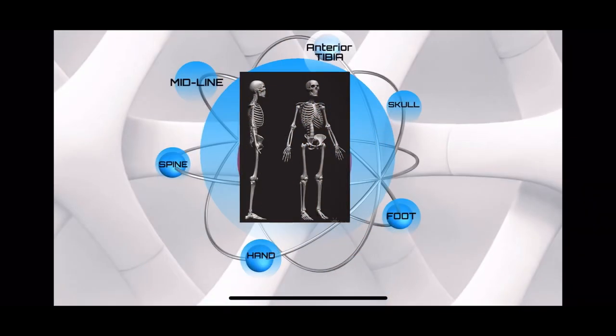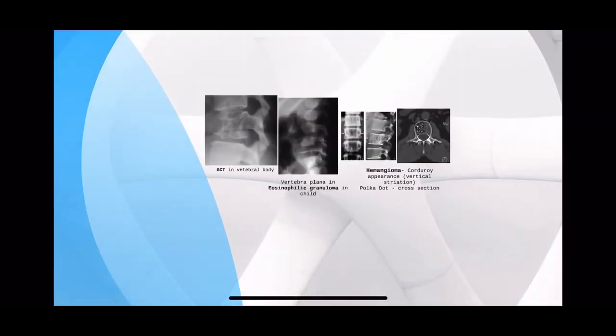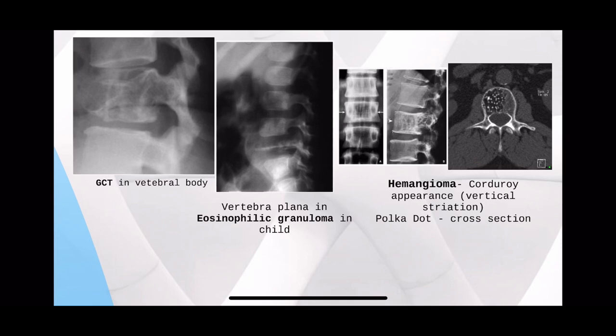In case you get a spine X-ray, first locate the lesion — whether it's in the anterior part or in the posterior elements. If the anterior vertebral body is affected, then think of giant cell tumor, eosinophilic granuloma, or hemangiomas. GCT will show a lytic lesion in the vertebral body, while granuloma will show vertebral plana — the body is collapsed.